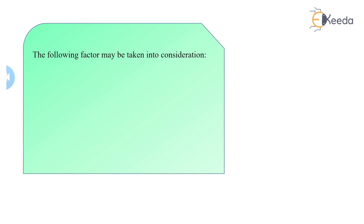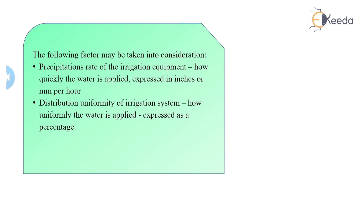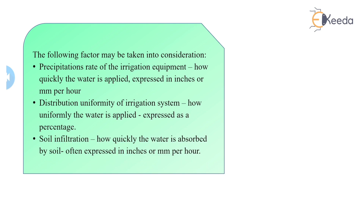During scheduling, some factors must be taken into consideration. First, the precipitation rate of the irrigation equipment — how quickly the water is applied. Second, the distribution uniformity of the irrigation system — how uniformly water is applied on the ground so that crop production is successful. Third, soil infiltration — the type of soil available on the land and how quickly the water is absorbed into the soil.